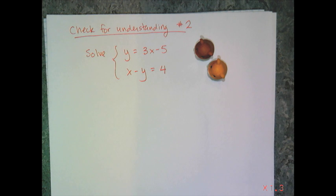So now it's your turn to try a 2 hamster level problem. I want you to solve the system y equals 3x minus 5 and x minus y equals 4 using substitution.